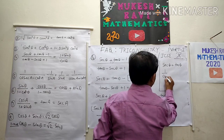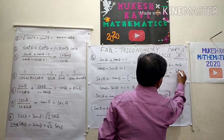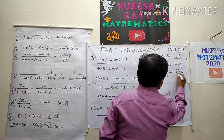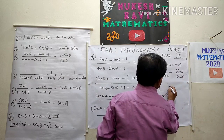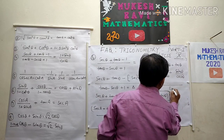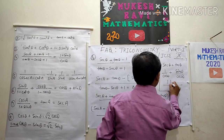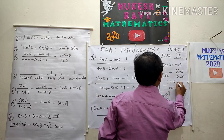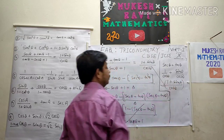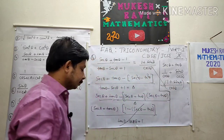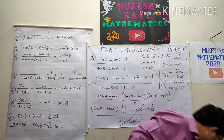Sec θ is 1/cos θ and tan θ is sin θ/cos θ. Combining over cos θ gives (1 + sin θ)/cos θ. We have proved this. See the beauty of maths — using all the identities here.